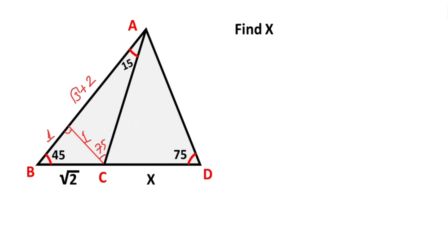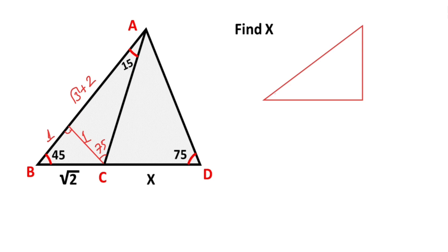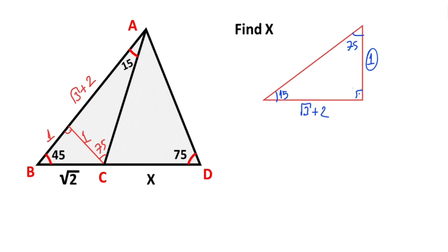Let's remind ourselves: if we have a right triangle with 15 degrees and 75 degrees, and there is a 1 unit opposite the 15 degrees, then opposite the 75 degrees must be equal to root 3 plus 2 units, and the hypotenuse must be equal to root 6 plus root 2.